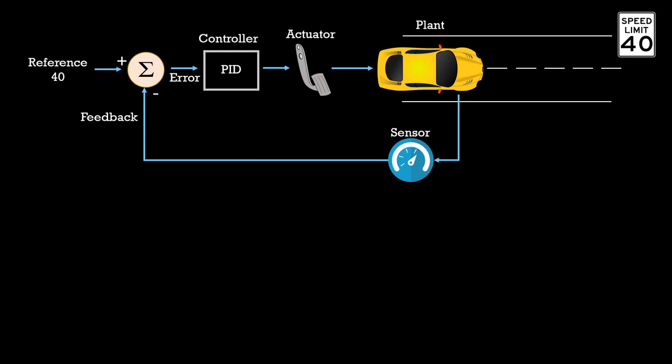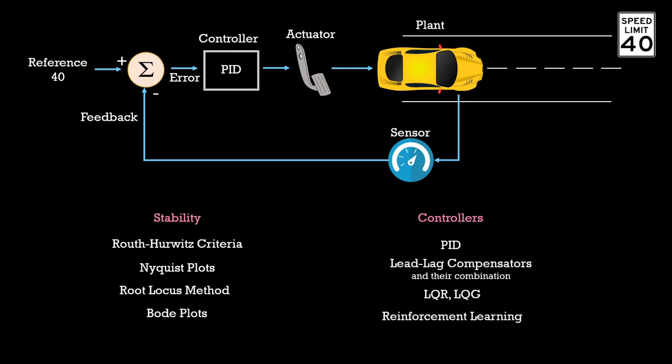But there is another problem. Controllers can be notorious and make the system vulnerable if not properly designed. And here enters the control theory. There is a whole set of theory which talks about how to make the system and the controller stable. To be specific, there is the Routh-Hervist Criteria, Nyquist Plots, Root-Locus Method, Bode Plots, etc. And there are several types of controllers as well: PID, Lead-Lag Compensators, LQR, Reinforcement Learning, etc.